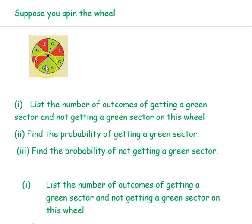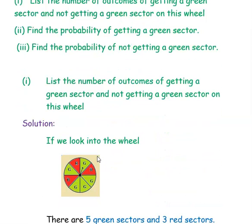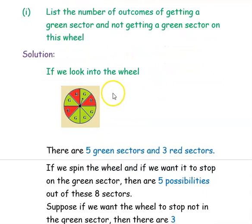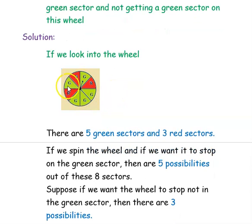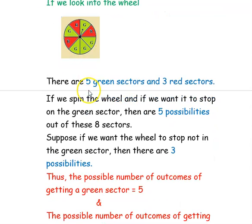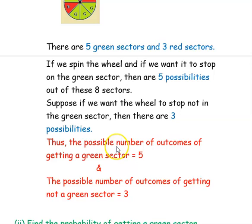Next question: suppose you spin the wheel. List the number of outcomes of getting a green sector and not getting a green sector on this wheel. If you look into the wheel, you have totally 8 sectors. Out of these 8 sectors, you have 3 red sectors and 5 green sectors. If you spin the wheel and want to stop on the green sector, there are 5 possibilities out of 8 sectors. If you want the wheel to stop not in the green sector, that is in the red sector, then you have 3 possibilities out of 8 sectors. Thus the possible number of outcomes of getting a green sector is 5 and of not getting a green sector is 3.